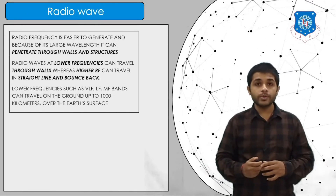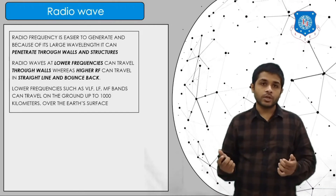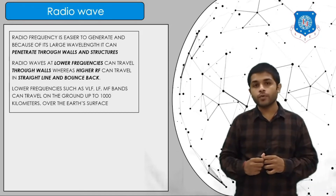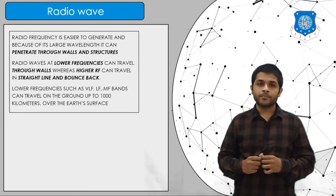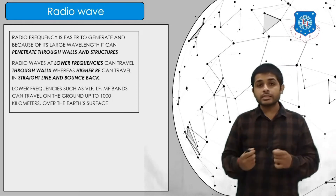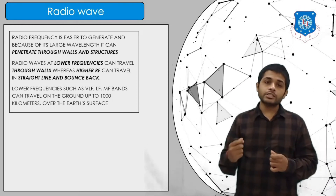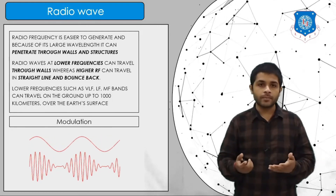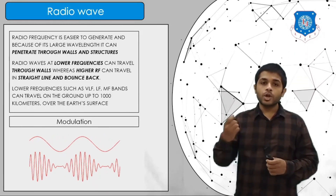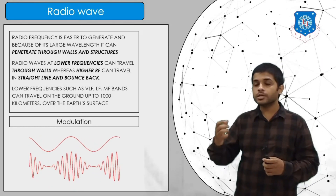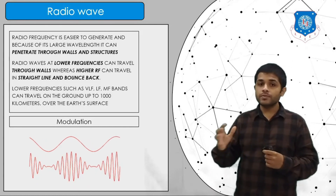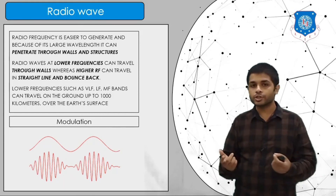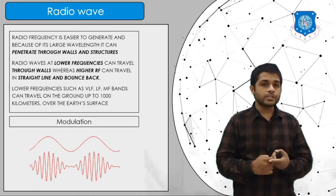Radio waves have a very large wavelength, so they can penetrate through walls. At lower frequencies, radio waves can travel through walls; at higher frequencies, they can bounce back. To transmit radio waves over long distances, modulation is required. Modulation means converting a lower-frequency signal into a higher-frequency signal so it can travel a long range. Types of modulation include amplitude modulation (AM), frequency modulation (FM), and phase modulation.